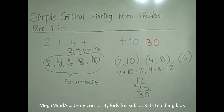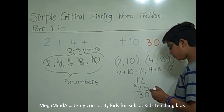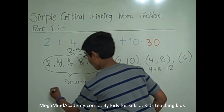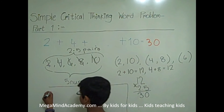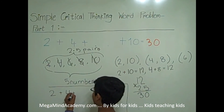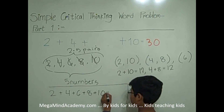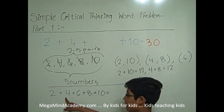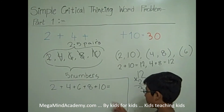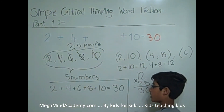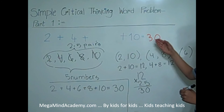Now we can use a manual way to solve our problem for checking our answer. We do 2 plus 4 plus 6 plus 8 plus 10: 2 plus 4 is 6, plus 6 is 12, plus 8 is 20, plus 10 is equal to 30. So the answer of 2 plus 4 plus dot dot dot plus 10 is equal to 30.